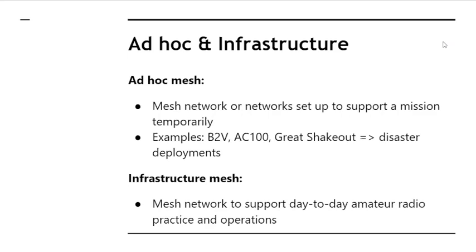Then there's infrastructure mesh — networks that support day-to-day amateur radio practice and operations. Those are usually off mountaintops with wide-area coverage, and people can hook into these networks to do voice over IP, email, and pretty much anything you can do on an IP network.